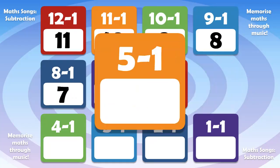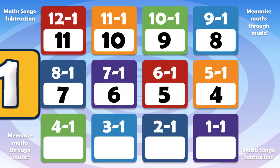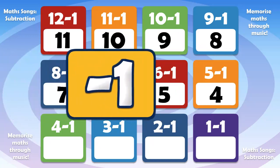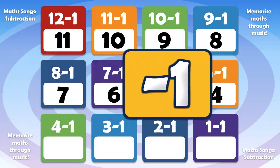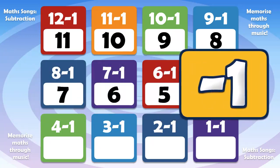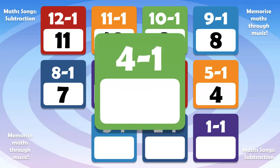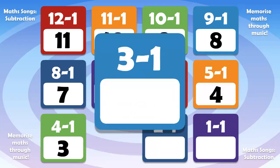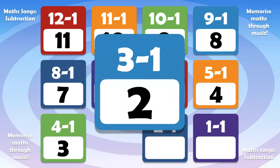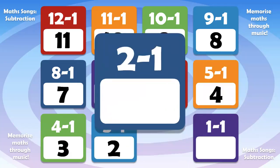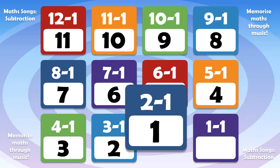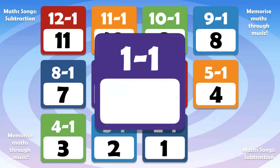5 minus 1 is 4. 4 minus 1 is 3. 3 minus 1 is 2. 2 minus 1 is 1. 1 minus 1 is 0.